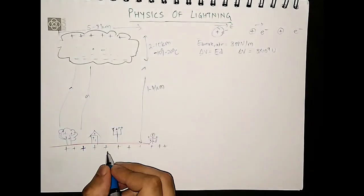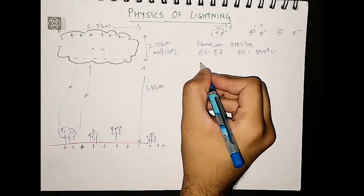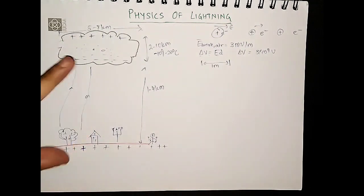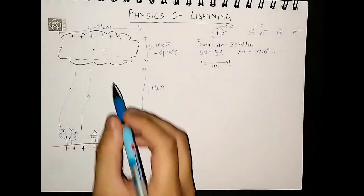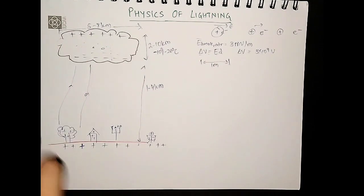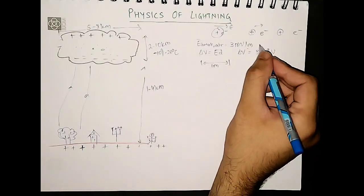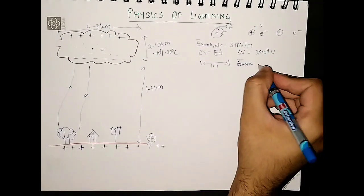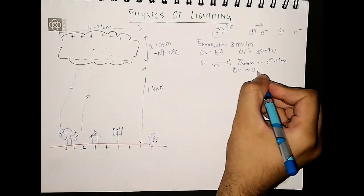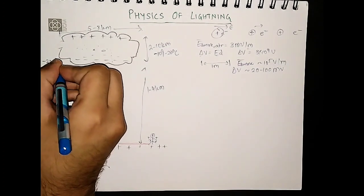But this breakdown electric field value is found using lab instruments where the discharge is between plates about 1 meter apart. Here we have a huge distance, and larger distance means more molecules. Since it is a probabilistic event, more molecules means higher probability of breakdown, so the actual electric field required is less. Actually it is about 10 orders of magnitude less, so the actual breakdown field needed is around 10 to the 5 volts per meter. Hence the potential difference is typically around 20 to 100 megavolts — so if this ground is at 0 volts, the cloud is at minus 20 to 100 megavolts.